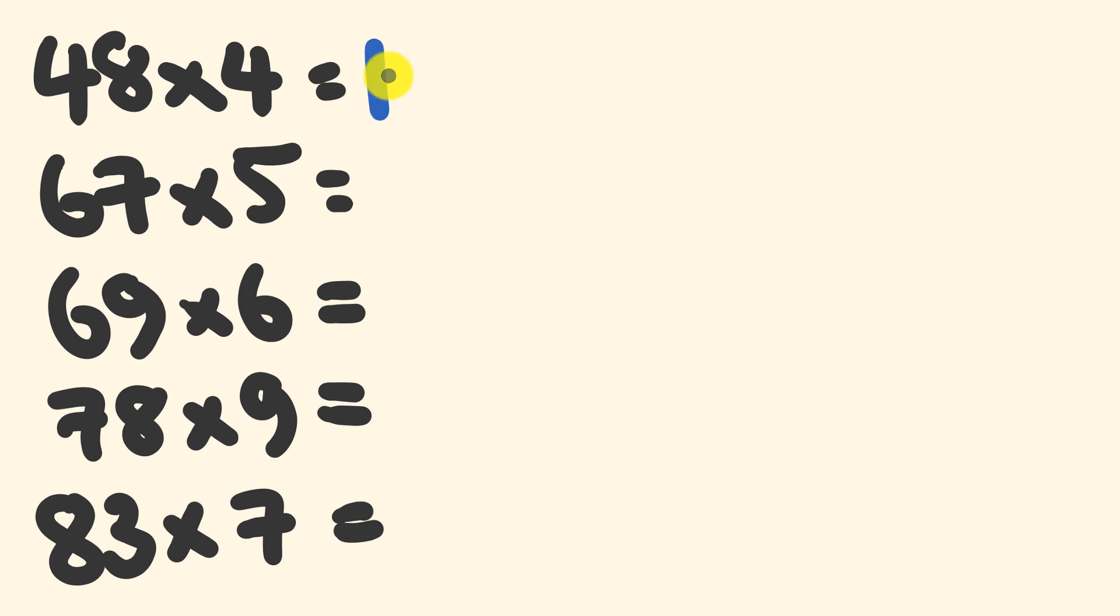We have 40 times 4, which is 160. And to that, we're going to add 8 times 4, 32. A nice easy answer of 192. Next, we have 67 multiplied by 5.